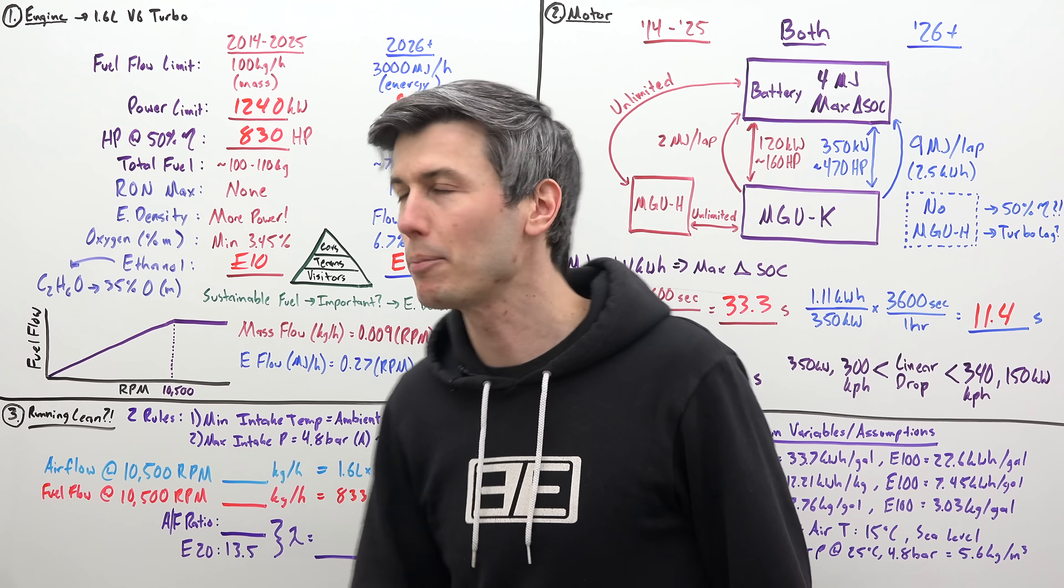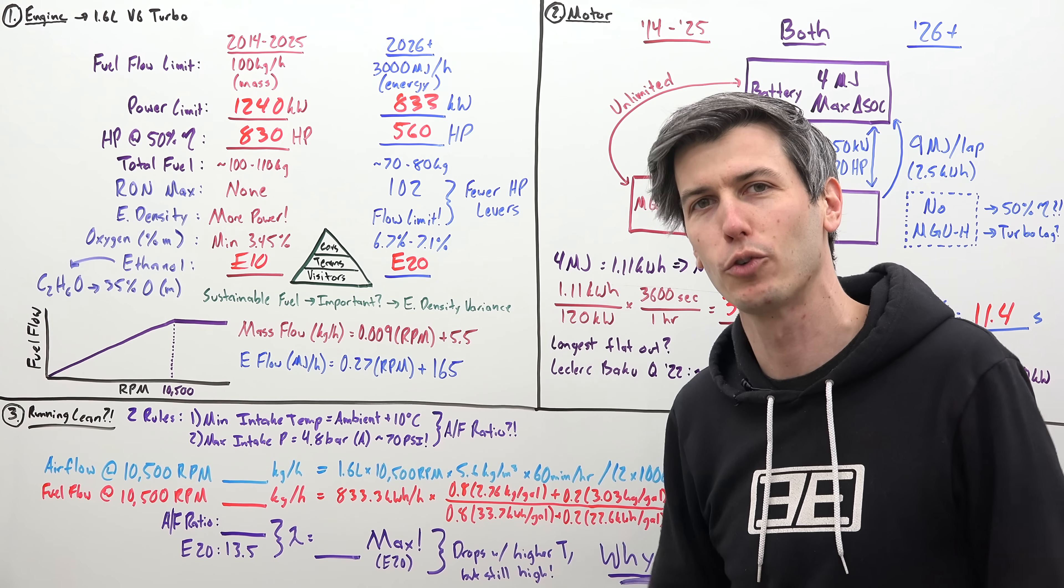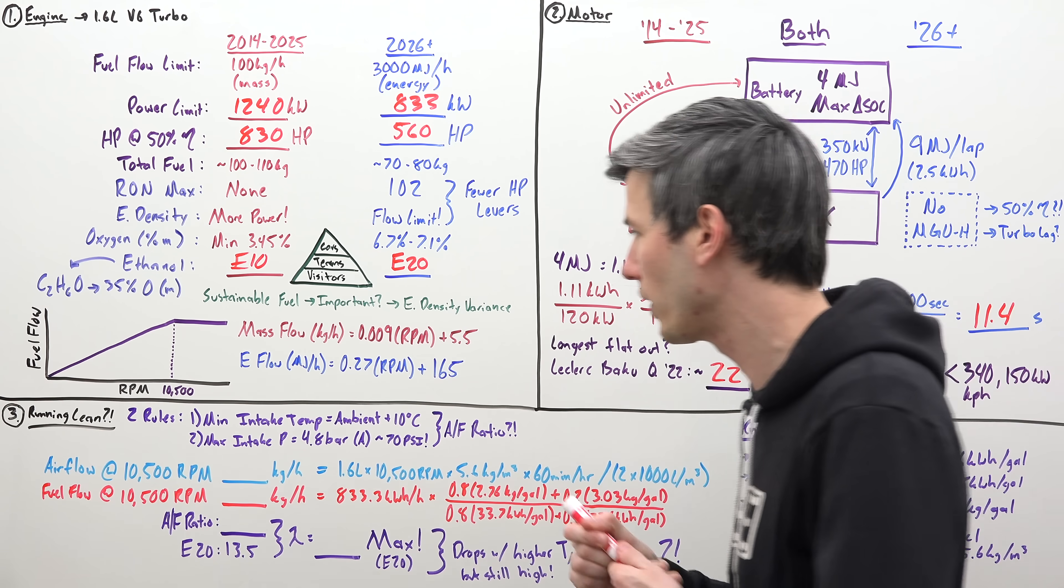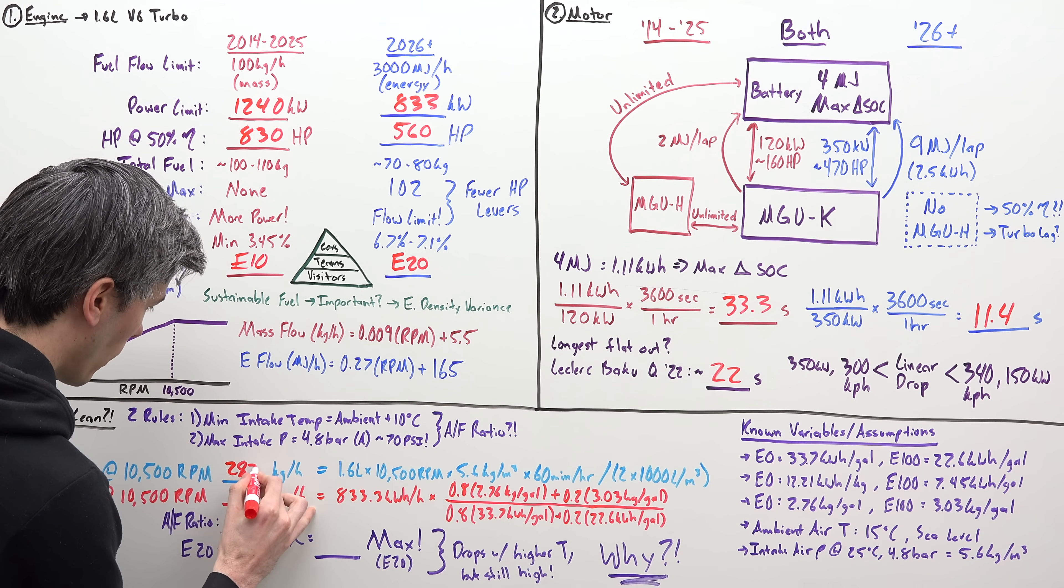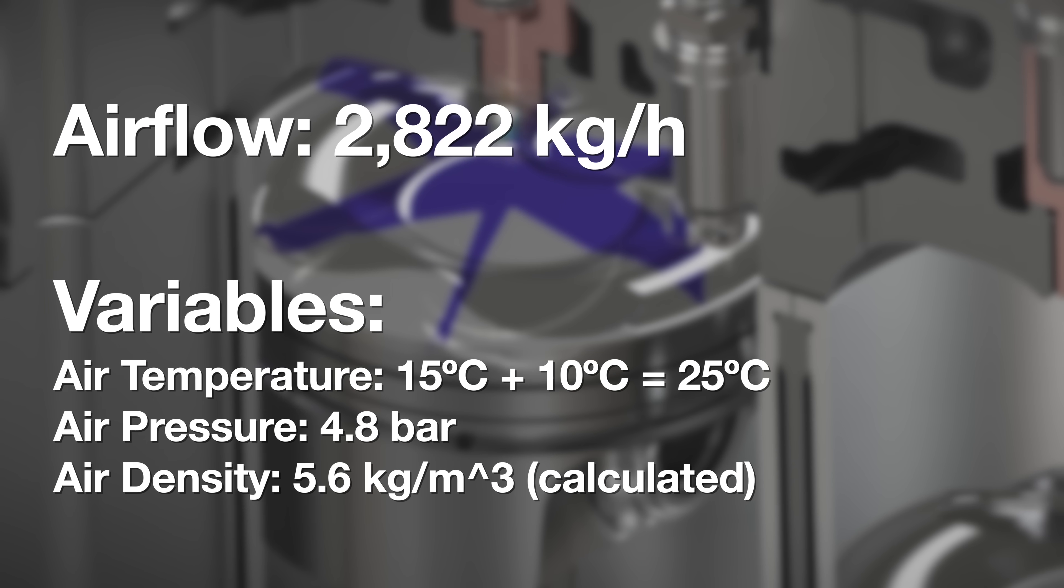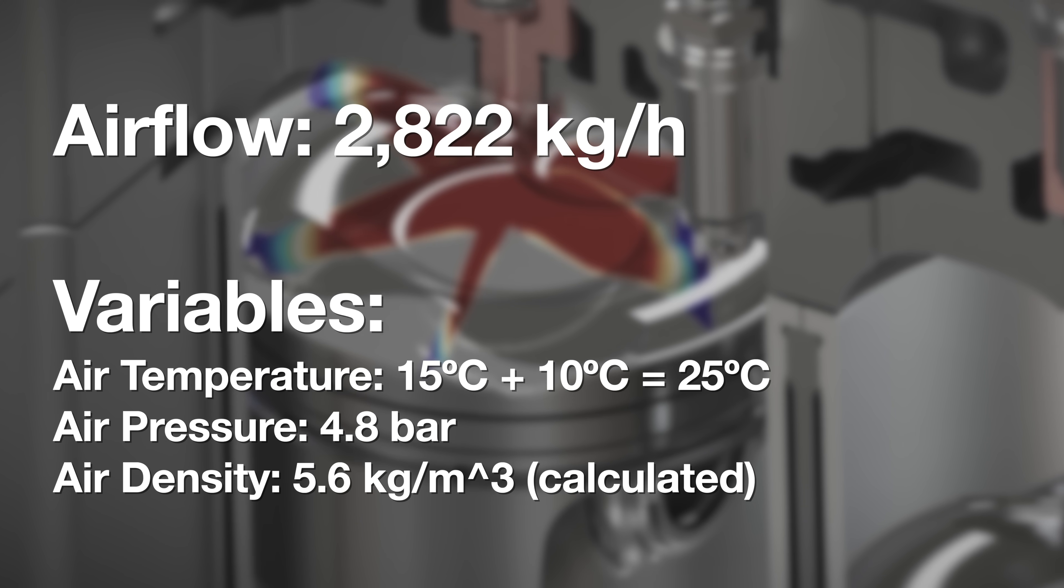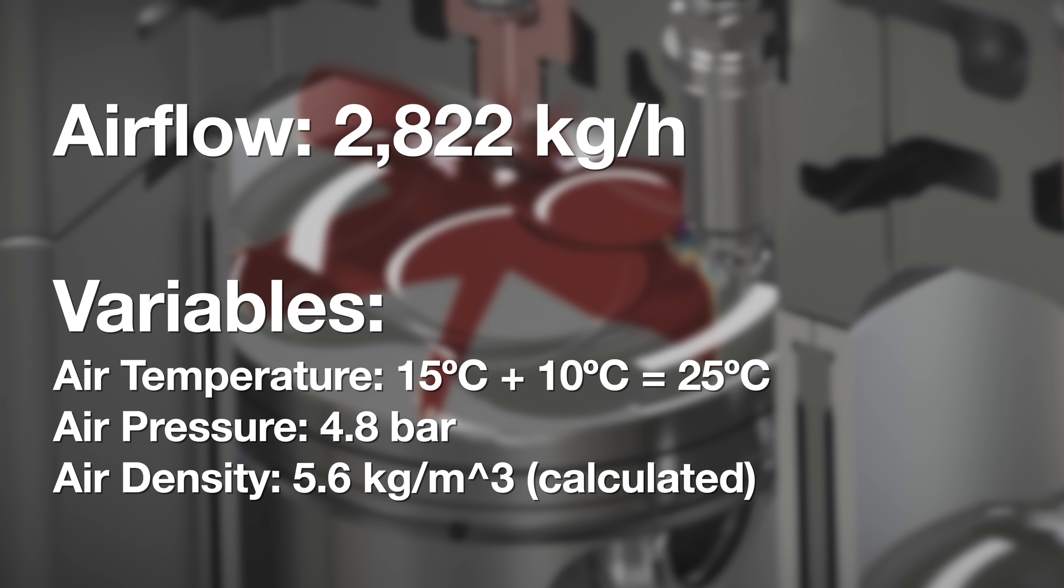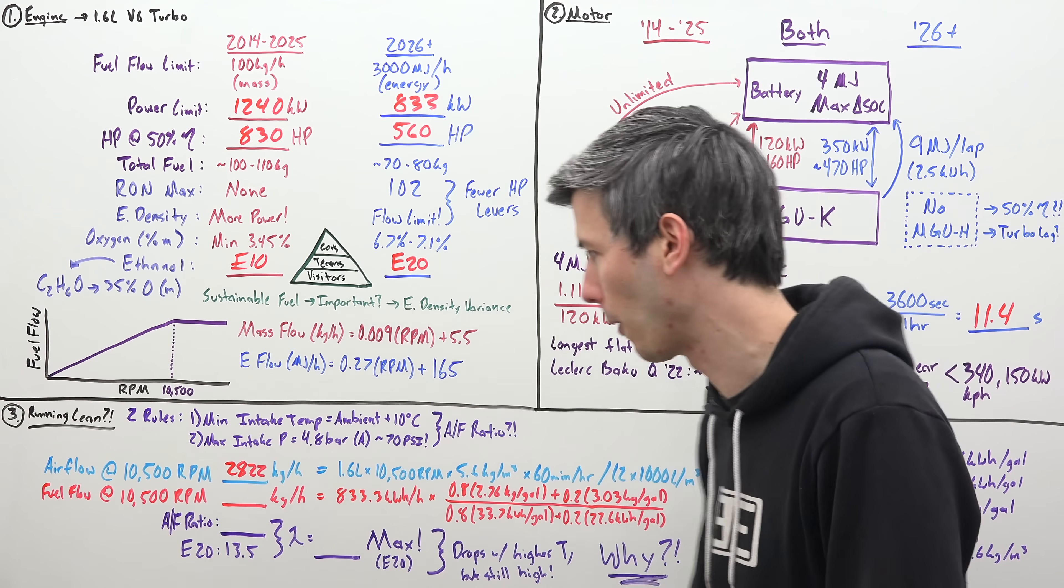This gets a little tricky because we're given a number of energy per hour, not mass per hour. So it's not easy to do an air-fuel ratio. Calculating the airflow at 10,500 RPM, that's very easy to do. We did it in the last video on Formula One. In the example here, we're going to be at 2,822 kilograms per hour. That's imagining we're at sea level, the ambient temperature is 15 degrees Celsius, and thus our intake temperature is 15 plus 10, so 25 degrees Celsius. And we get some air density numbers going into that vehicle. We've got half our equation solved. We just want to divide airflow by fuel flow to get our air-fuel ratio. We know our airflow. What is our fuel flow?